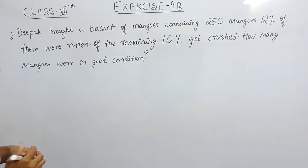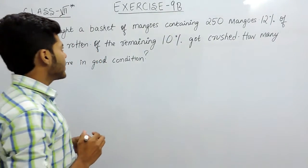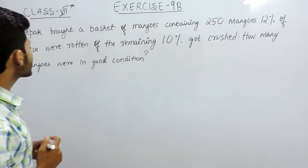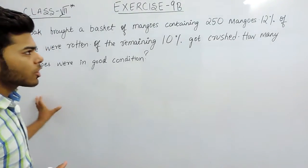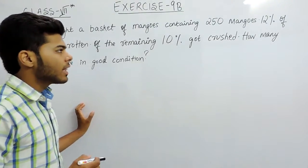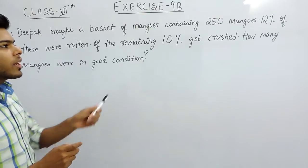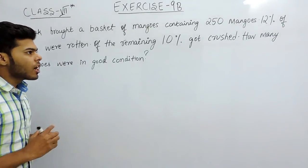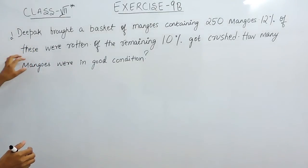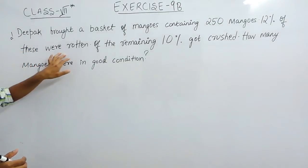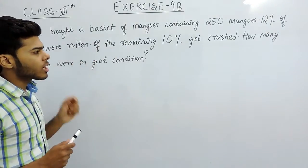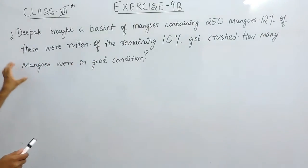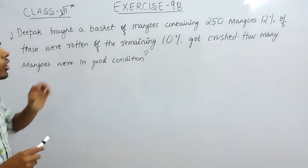We will solve the first question of exercise 9b. In this question we are given that a person buys a basket of mangoes — they totaled 250 mangoes. First of all, 12% of them were rotten. Then the remaining 10% got crushed. So we have to find the mangoes that are in good condition.